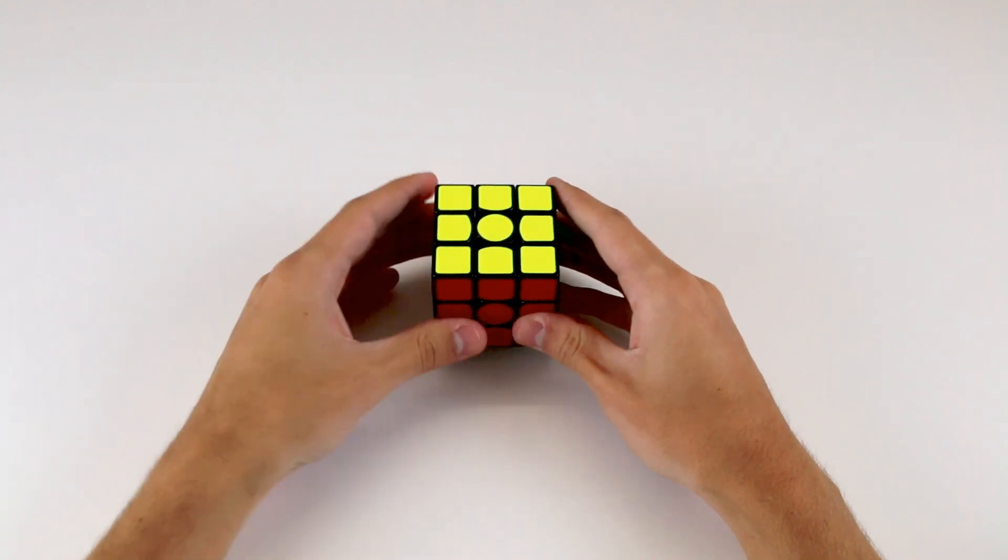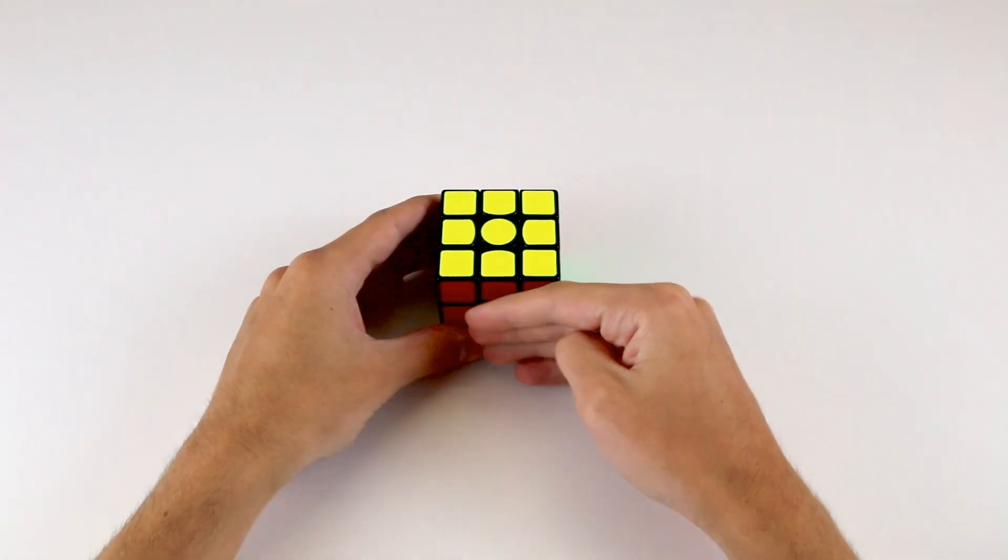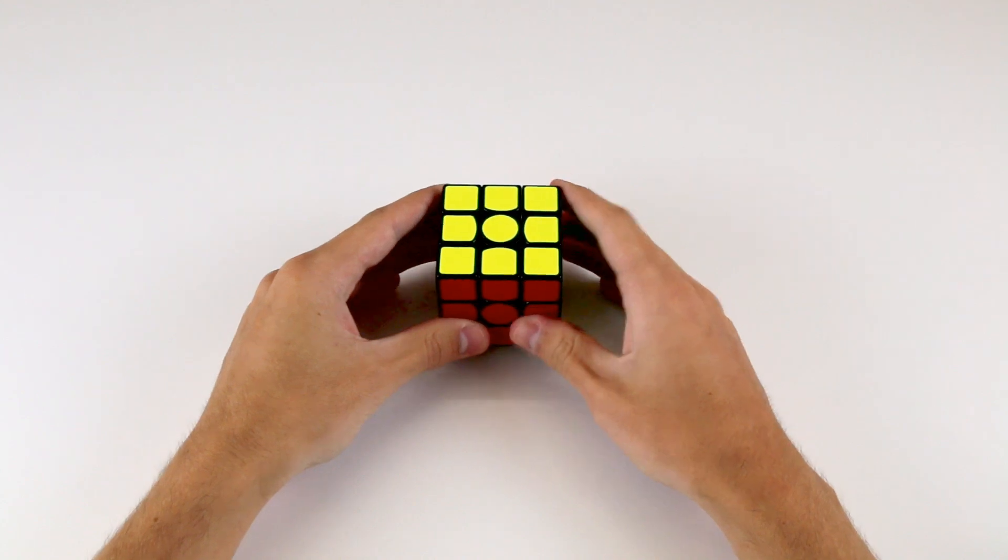So if we hold the cube in a fixed orientation, with one side on the top and one side on the front, there are six possible sides that we can turn.